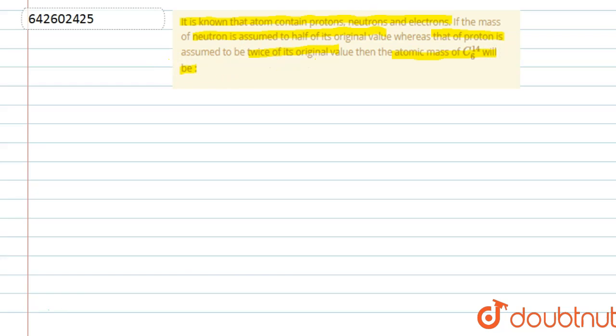Now we are given with the isotope of carbon that is with mass number 14 and atomic number 6. Here we represent mass number that is represented by A. Here we represent atomic number that is Z.